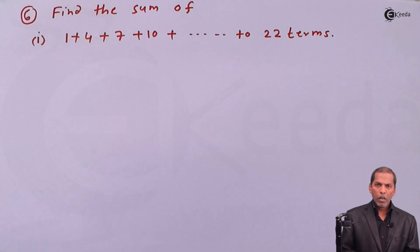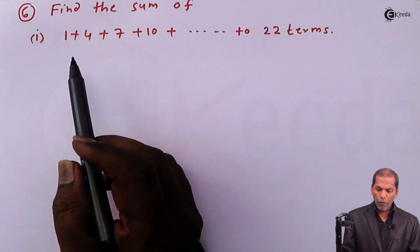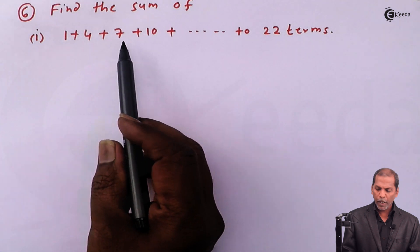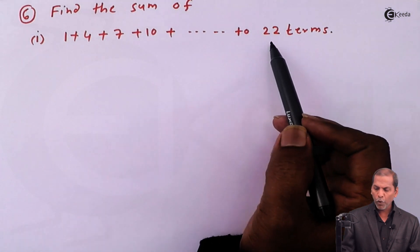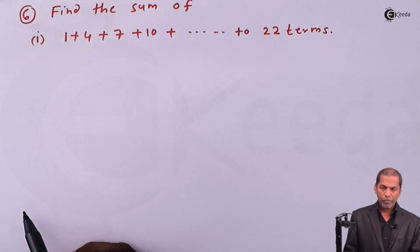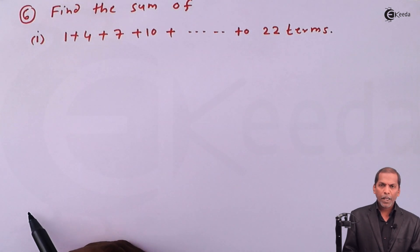Hello friends. Now we see problem number 6 based on AP, sub question 1. Find the sum of 1 plus 4 plus 7 plus 10 up to 22 terms. Now let's see the solution.